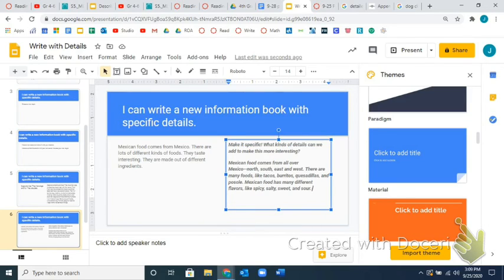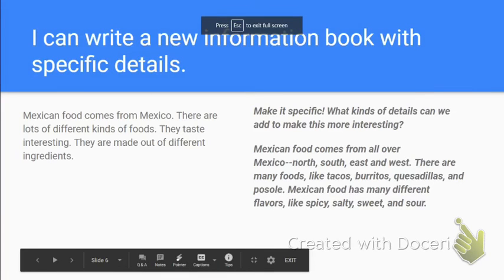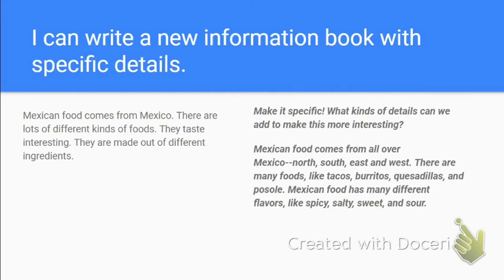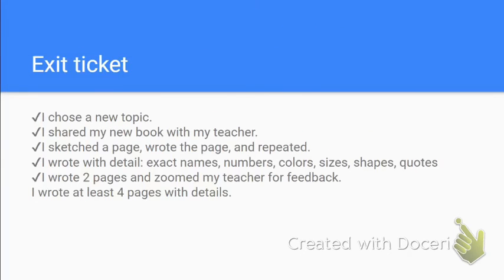Take any writing you have today and go back to add these details. On the Canvas page there's going to be a checklist of different things you can add, and it's also here at the end of the video. Here's your exit ticket — check off all five things before you Zoom your teacher for feedback: I chose a new topic. I shared a new book. I sketched a page, wrote a page, and repeated. I wrote with detail — exact names, numbers, colors, sizes, shapes, or quotes. And did you write two pages?